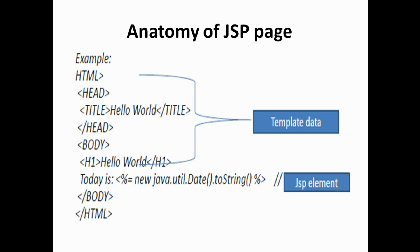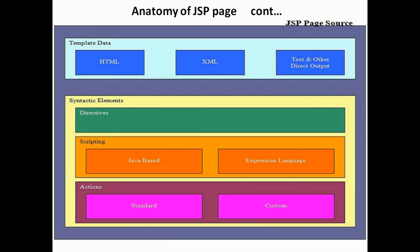In the anatomy of JSP, the first component is template data. A JSP page source can have template data including HTML, XML, text, and other direct output. The second component is syntactic elements. Syntactic elements include directives, scripting, Java-based and expression language, and standard and custom actions.